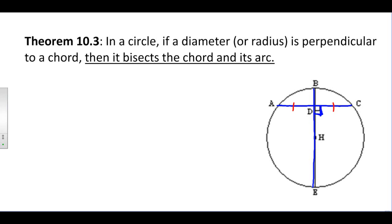It also says it bisects its arc. So arc AB and arc BC would also have to be congruent to each other.